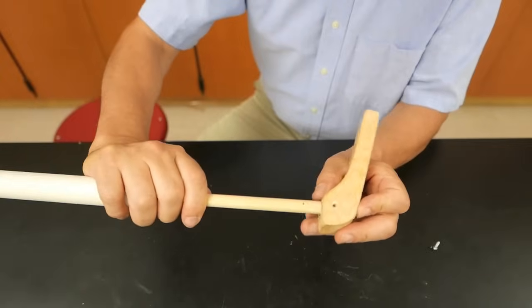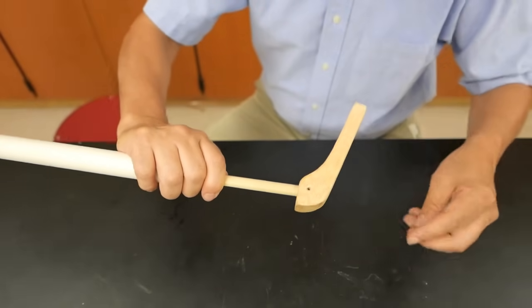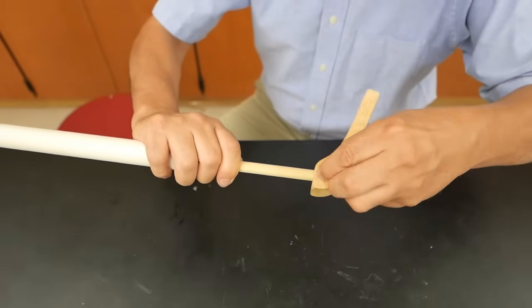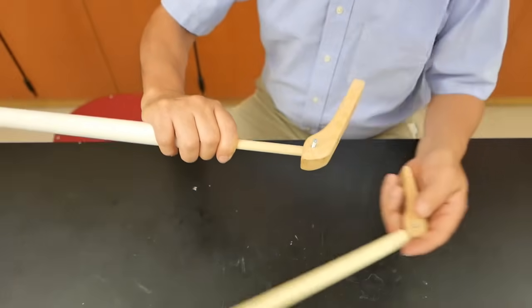Adding a handle to the plunger is a nice touch. It just makes it easier to use. However, I would suggest screwing it in place rather than gluing it just in case you want to take it apart.